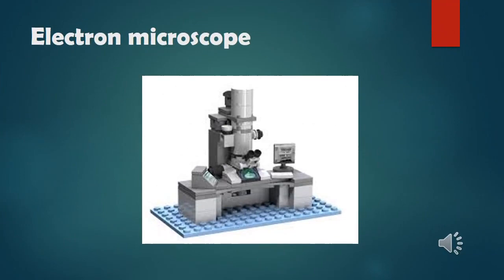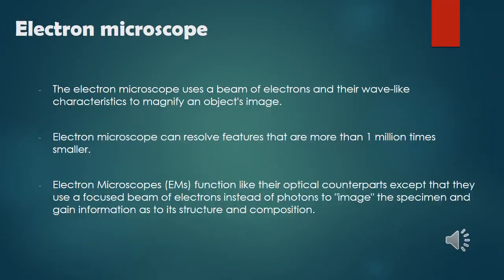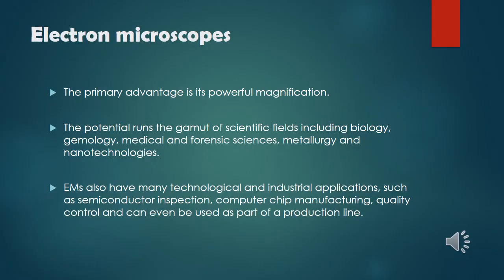The electron microscope uses a beam of electrons and their wave-like characteristics to magnify an object's image. Electron microscopes can resolve features more than 1 million times smaller. They function like optical counterparts except they use a focused beam of electrons instead of photons to image the specimen and gain information about its structure and composition. The primary advantage is its powerful magnification.